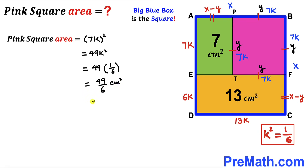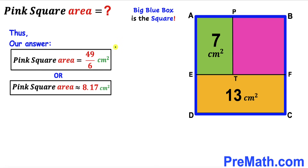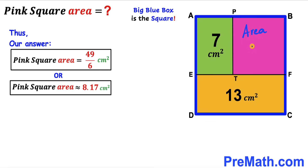Therefore, the area of the pink shaded square is 49/6 cm², which is approximately 8.1 cm². That's our final answer. Thanks for watching, and please don't forget to subscribe to the channel for more exciting videos!